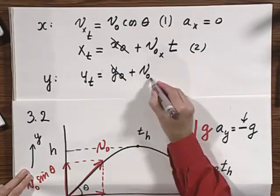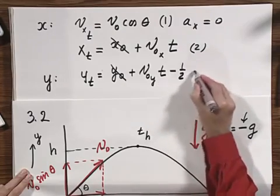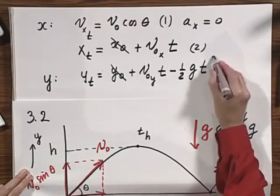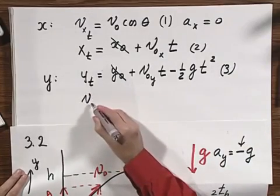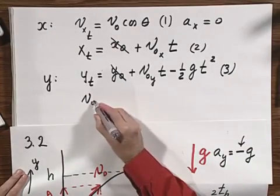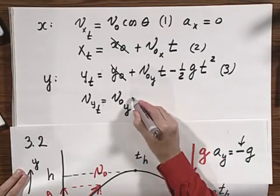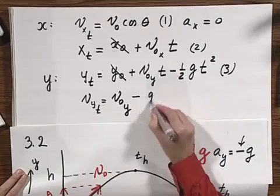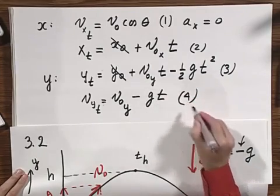plus v zero y times t minus one-half g t squared. That's equation number three. And the velocity in the y direction as a function of time equals the velocity in the y direction at time t equals zero minus g t. And that is my equation number four.